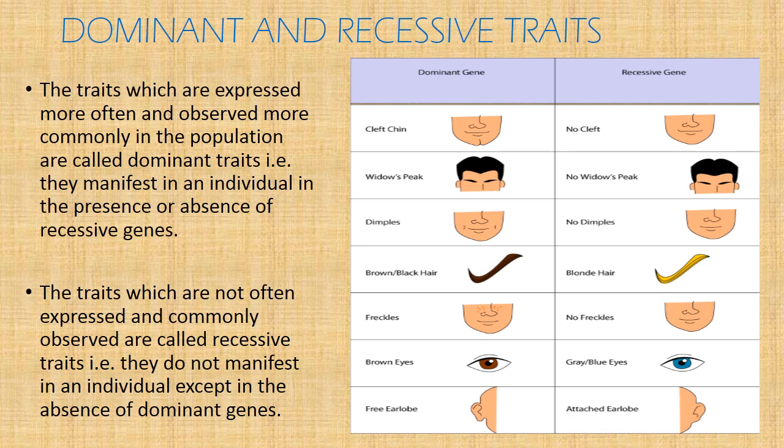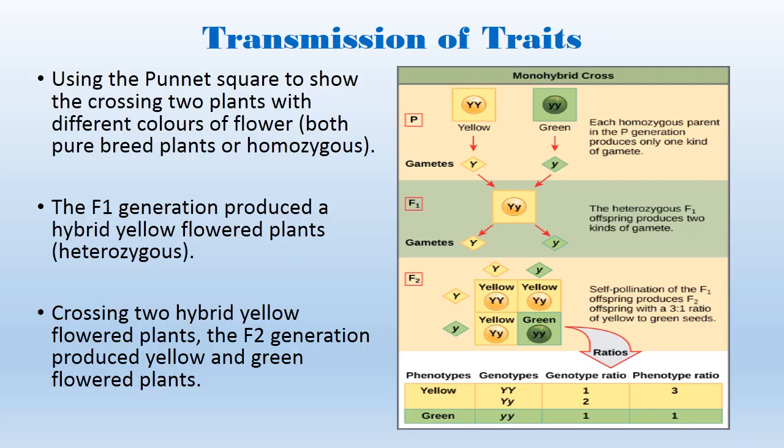Now let's look at how these traits are transmitted from parent to offspring. You must note that Gregor Mendel, a Swiss monk, is usually called the father of modern genetics. He carried out certain experiments which we are going to look at carefully here. He was the one who gave us the details of how traits are transmitted from one generation to another using plants.